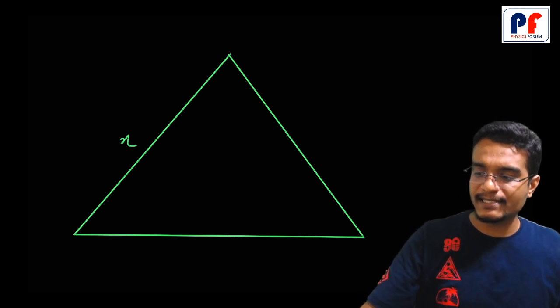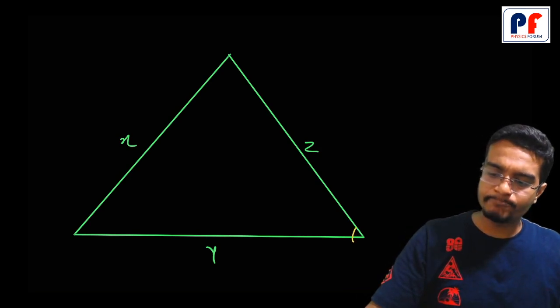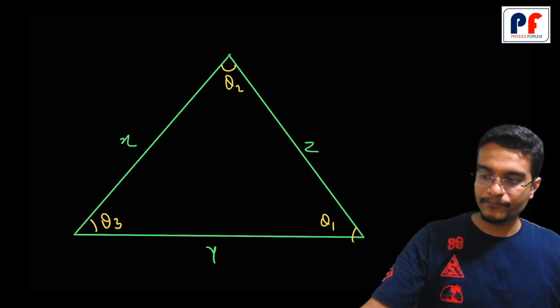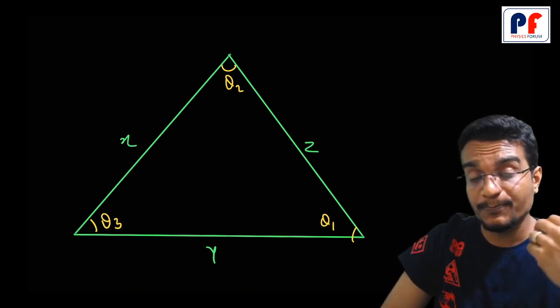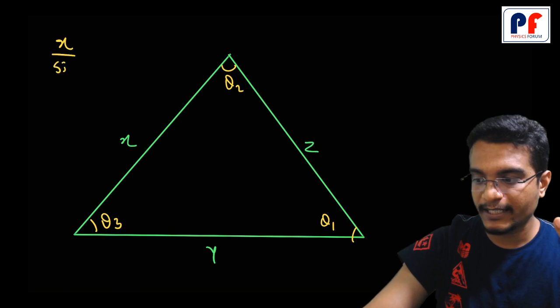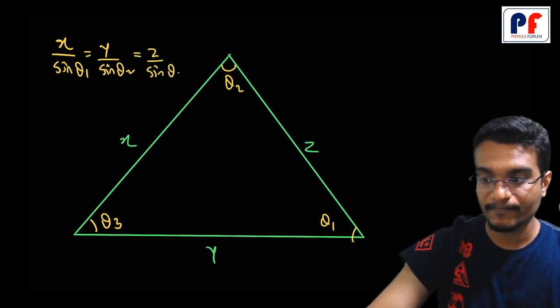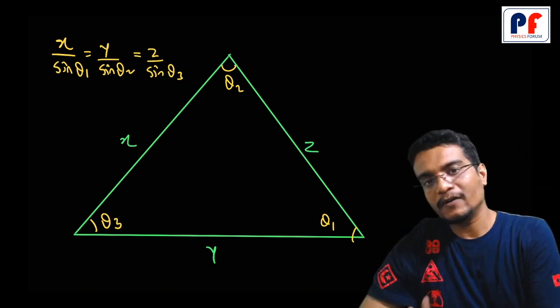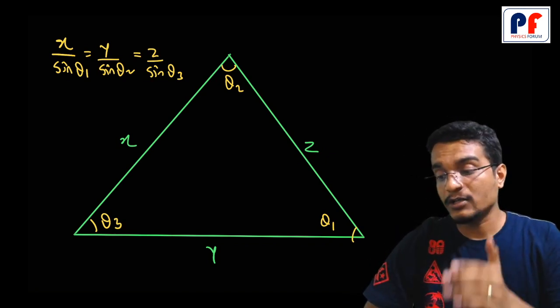This is x, this is y, and this is z. This is theta1, theta2, and theta3. It is not tough. Now it is proved that x upon sin theta1 is always equal to y upon sin theta2, is always equal to z upon sin theta3. This is obviously the sine rule or the law of sines. I think you will understand this basic concept and it will help you very much in Lami's theorem.